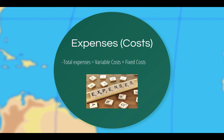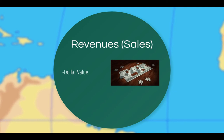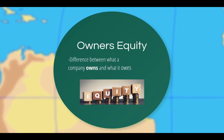Expenses, also referred to as costs, provide a dollar value for the cost incurred in generating revenue during a given period of time. Total expenses are made up of the variable and fixed costs that are not directly related to making the product or delivering the service. Revenues, also referred to as sales, provide a dollar value of all the products and/or services an organization provides to their customers. Owner's equity is the difference between what a company owns and what it owes at any particular point in time.